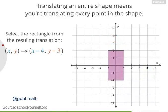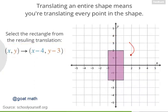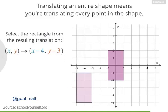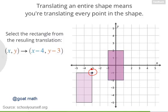You can see that by translating the shapes, we applied the same translation to each of these points. So if you apply the translation x, y to x minus four, y minus three to the rectangle in the middle of this graph, which rectangle do you get? Exactly — you get the rectangle in the bottom left. You can check that by applying this translation to any point of the original rectangle, like the vertex in the upper right. If you subtract four from the x-coordinate and subtract three from the y-coordinate, you have the upper right vertex of the translated rectangle.